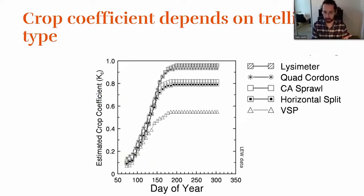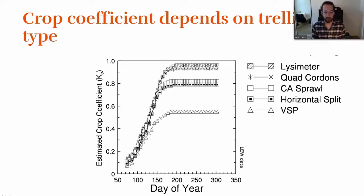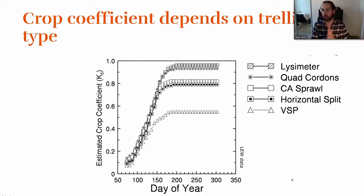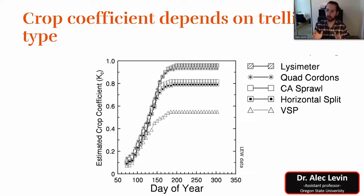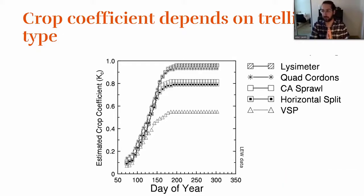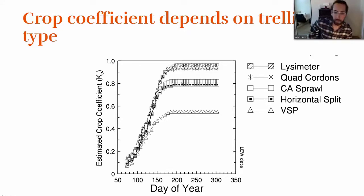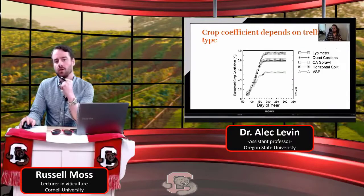But before I go back to that, I want to point out that trellising system also matters. Here's an estimated crop coefficient over time — you can see VSP is really low, because the VSP trellis puts all the shoots up into a thin curtain or hedge. At solar noon when water use is at its highest, that tiny hedgerow intercepts much less light compared to lyre or sprawl-type canopies, which do a much better job of displaying leaf area and therefore have a higher crop coefficient.